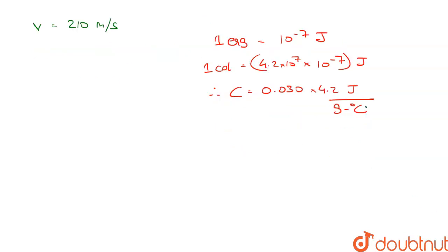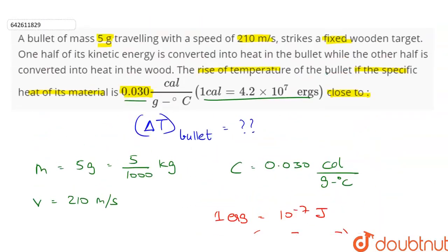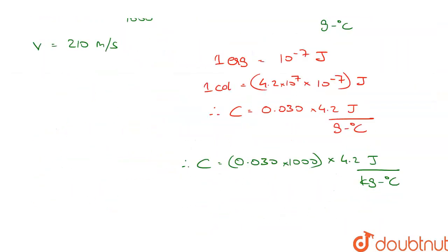Therefore c is equal to 0.030 into 4.2 joule per gram per degree celsius. The unit still is joule per gram per degree celsius. So in SI units c will be equal to 0.030 into 1000 into 4.2 joule per kg per degree celsius.